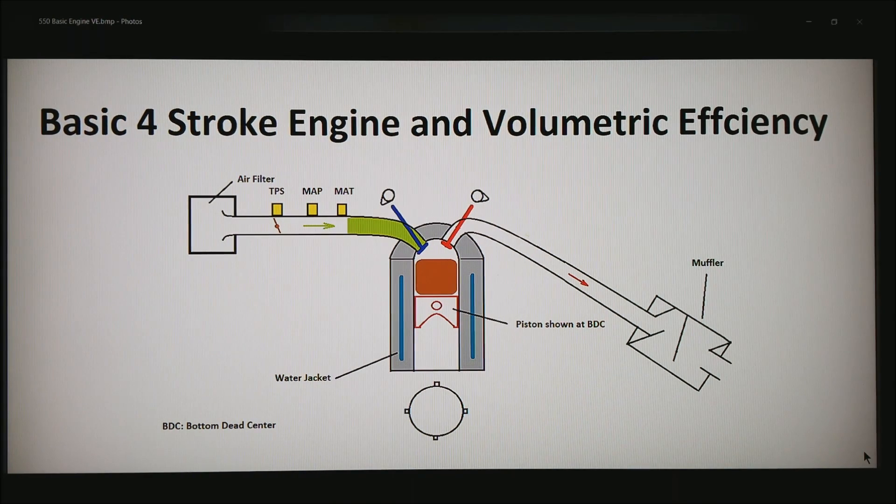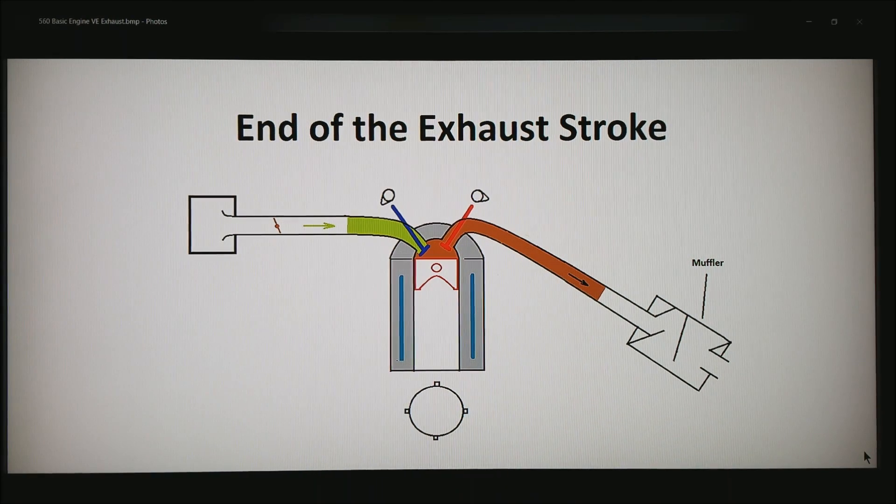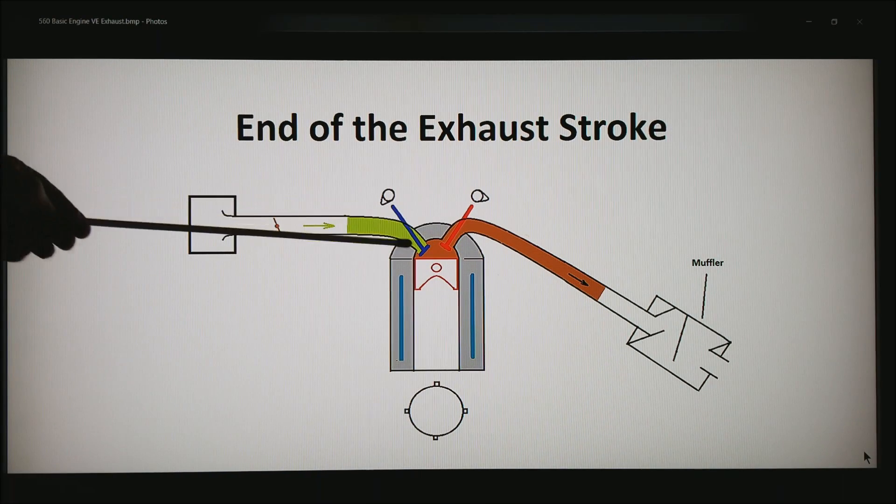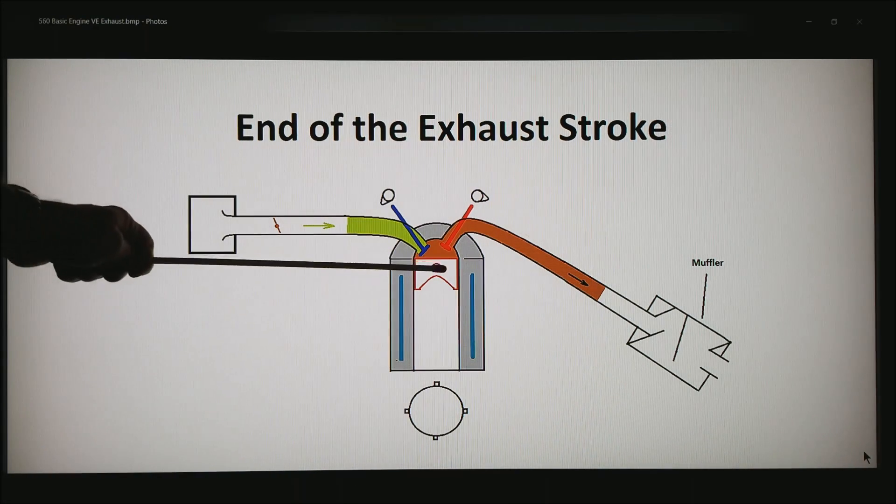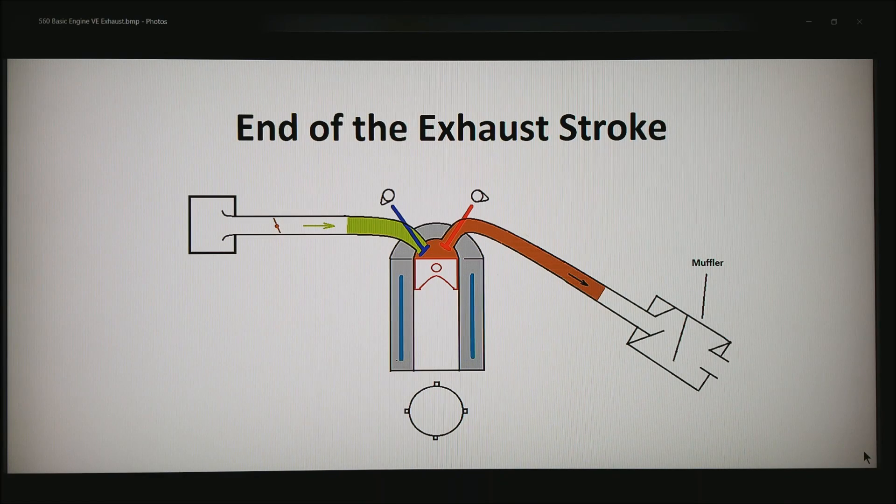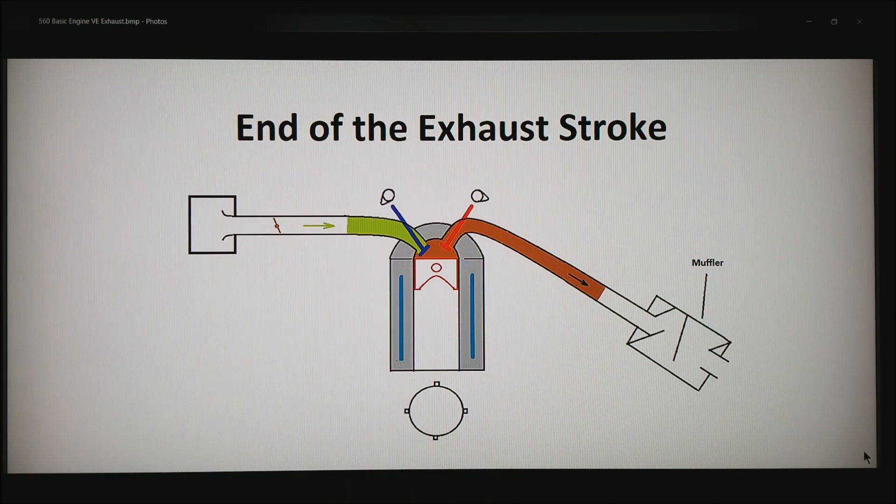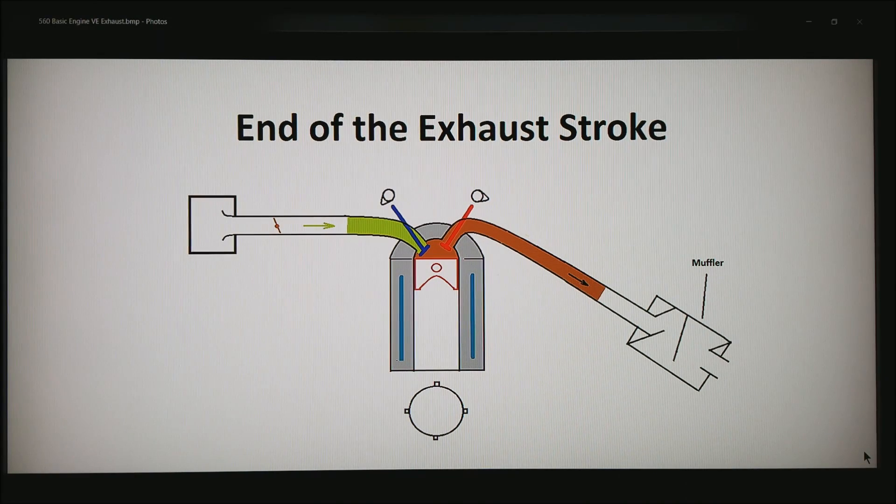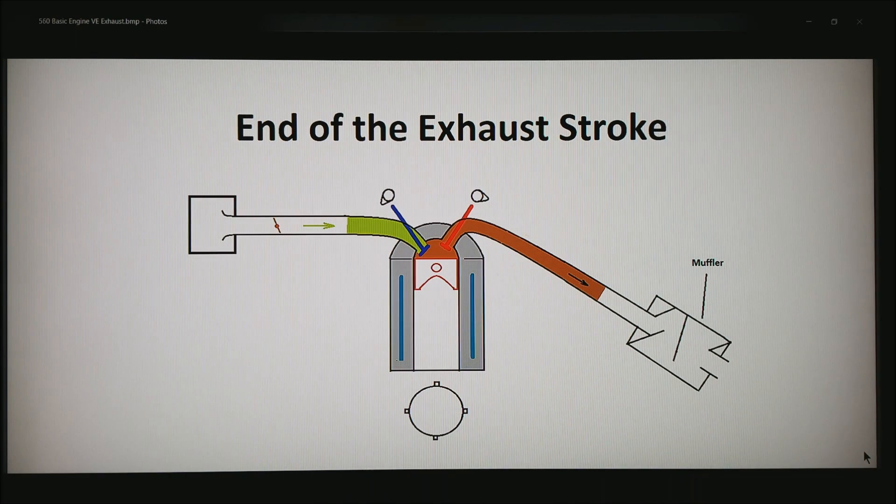But in reality it doesn't quite work out that way. So now let's talk about the exhaust stroke. Every time the piston comes up you have an open exhaust valve and the majority of that exhaust heads down the exhaust system. But notice the piston, it's impossible to fully evacuate all of the exhaust out of the combustion chamber. We physically can't run the clearances that tight in the chamber, nor would you want to.